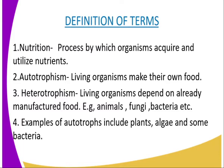Heterotrophism is a mode of nutrition where living organisms depend on already-manufactured food. In other terms, heterotrophism is a mode of nutrition that involves taking in ready-made complex food materials. These complex food materials — carbohydrates, proteins, and lipids — are obtained from the bodies of other living organisms.